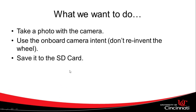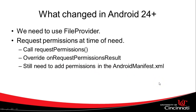What we want to do is take a photo with the camera, but we don't need to call the camera programmatically when we can just use an implicit intent to invoke the camera. After we've invoked the camera we want to make sure that the image is saved to the SD card. So what changed in Android 24 and greater?